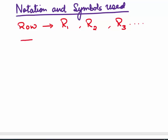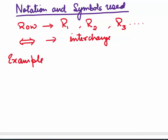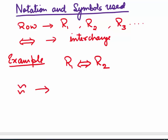Another symbol we use is for interchange of rows. For example, if I have to interchange R1 and R2 — that is row 1 and row 2 — we write it with the interchange symbol: R1 is interchanged with R2. The third symbol we use is for equivalence.